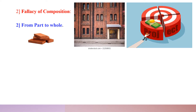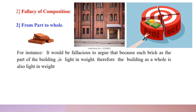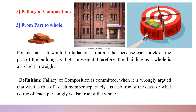When we argue in that manner, we commit the Fallacy of Composition — what is true of the part of the building, that is, what is true of the bricks, namely that they are light in weight, is said to be true of the whole building. The Fallacy of Composition is committed when it is wrongly argued that what is true of each member separately is also true of the class, or what is true of each part singly is also true of the whole.